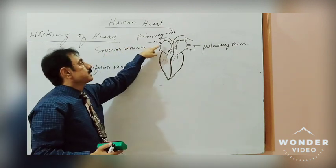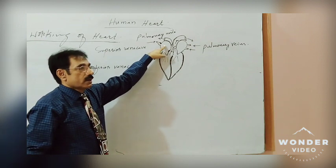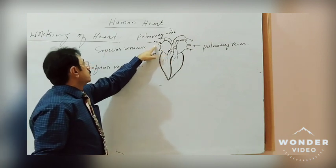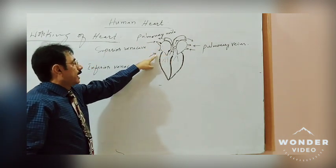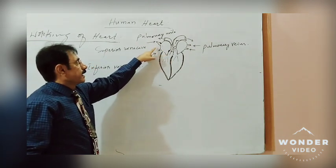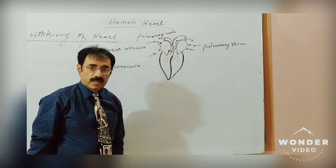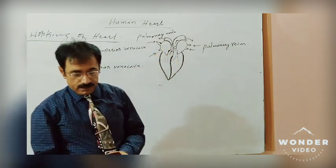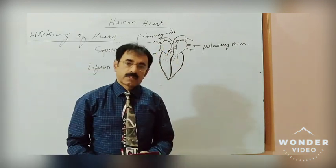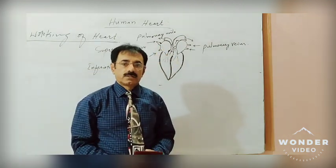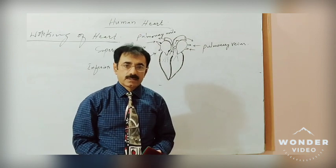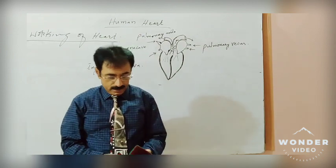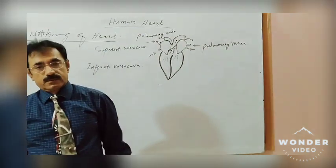The oxygenated blood carries carbon dioxide and becomes deoxygenated or impure blood. That impure blood then enters the right atrium again through the superior and inferior vena cava, and thus the cycle is recycled. Thank you very much — we will discuss this further in the next lecture.